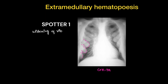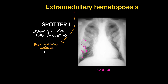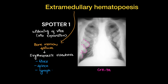The first case is extramedullary hematopoiesis. We can see in this image there is widening of ribs, and this occurs due to bone marrow failure that leads to erythropoiesis elsewhere. It occurs in organs like liver, spleen, and lymph nodes, and starts occurring in all other flat bones.